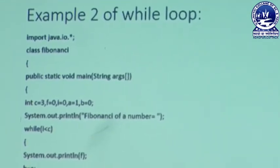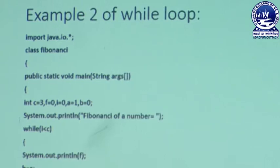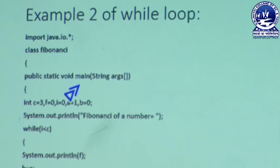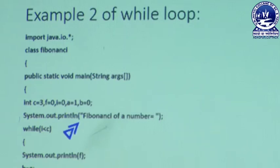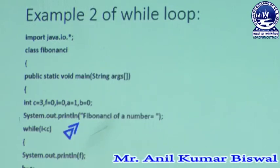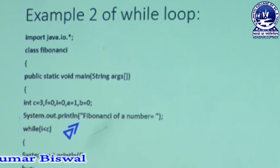We want to design a Fibonacci series program. First of all, we import the IO package. Then we create a class with the class name 'Fibonacci'. Then we write public static void main with parameter String args. In it, we declare some variables: c equal to 3, F equal to 0, i equal to 0, A equal to 1, B equal to 0. Then System.out.println 'Fibonacci numbers'. The Fibonacci series looks like: 0, 0 plus 1 equals 1, then 1 plus 1 equals 2, then 2 plus 1 equals 3, and so on — that is known as a Fibonacci series.